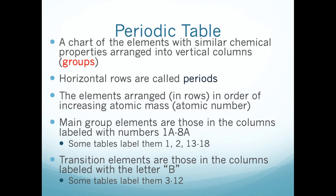As Mendeleev listed elements in order of mass, every time he got to an element with a similar property, he put it in a new row under a similar element. He noticed a repeating pattern about every seven elements or so — the noble gases hadn't been discovered yet. That's why it's called the periodic table: the properties of the elements repeat periodically.